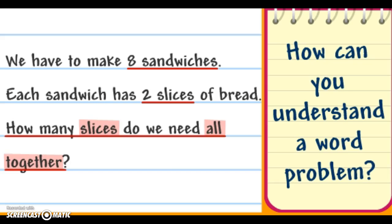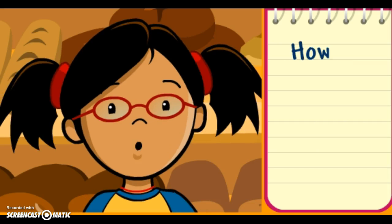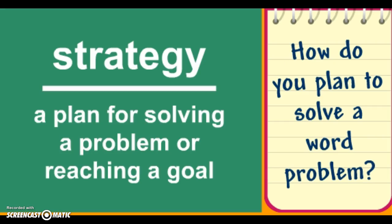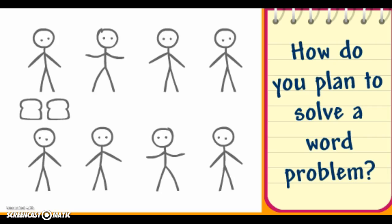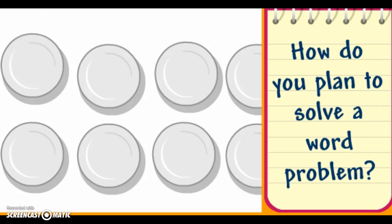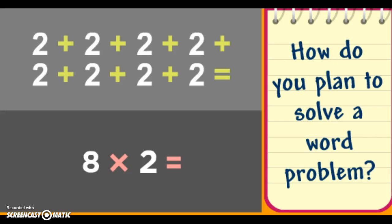Look for key words that give clues about which operation to use, like addition or subtraction. The next step is to make a plan. A strategy is a plan for solving a problem or reaching a goal. You can use one strategy or a few different ones. You can draw pictures, use models or counters, or even act out the problem. You can also make a table or chart, or write a number sentence to help you solve.